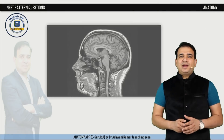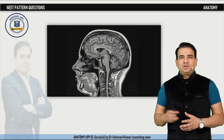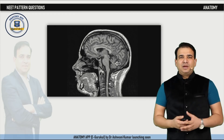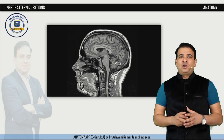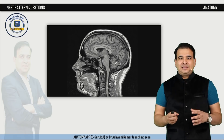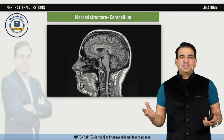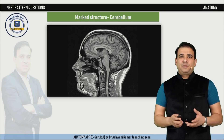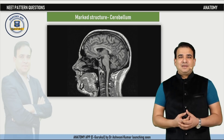In this sagittal MRI section showing different parts of the brain, the structure being asked about is the cerebellum — which everyone can identify. The typical arrangement of white matter in the cerebellum, called the arbor vitae, produces a fern-like pattern that helps identify the cerebellum in any section, whether sagittal, transverse, or coronal. It is probably the easiest structure to identify on MRI or CT.